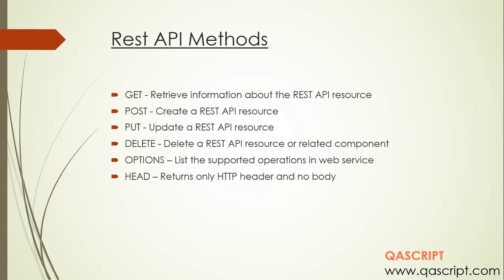The GET method helps us retrieve information from the server. Whenever a client sends a GET request, it is expecting some response from the server in the form of information. The POST method creates a new resource on the server — whenever we send a POST request, it is creating a new resource. PUT is a method through which you can update an existing resource on the server. Don't confuse them: POST is to create a new resource, and PUT is to update an existing one.